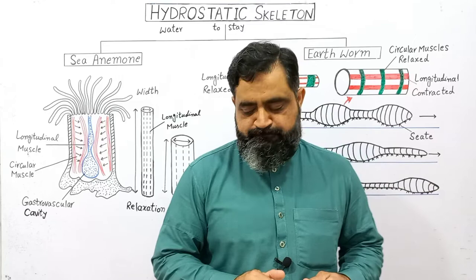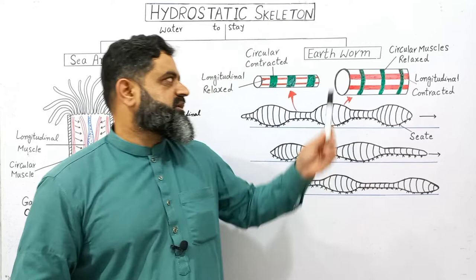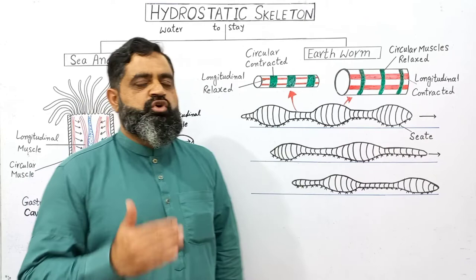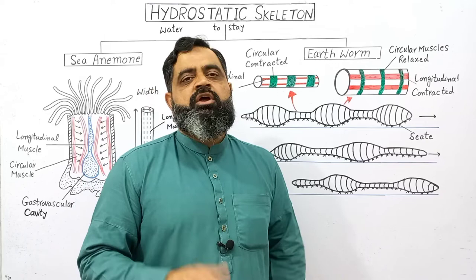The second example of hydrostatic skeleton belongs to phylum Annelida — it is the earthworm. The earthworm has an elongated, metamerically segmented body. When we take a cross-section of the body of an earthworm, we see that there are two types of muscles present.